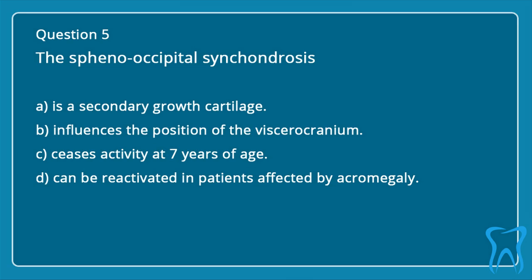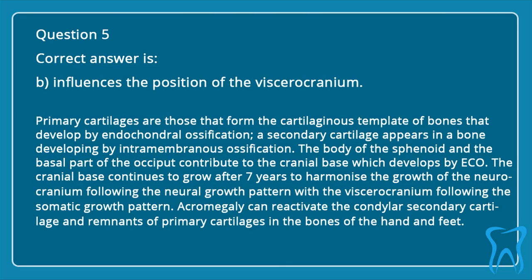Question 5: The sphenooccipital synchondrosis: a. Is a secondary growth cartilage. b. Influences the position of the viscerocranium. c. Ceases activity at 7 years of age. d. Can be reactivated in patients affected by acromegaly. Correct answer is b: it influences the position of the viscerocranium.